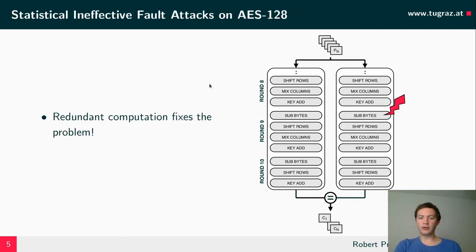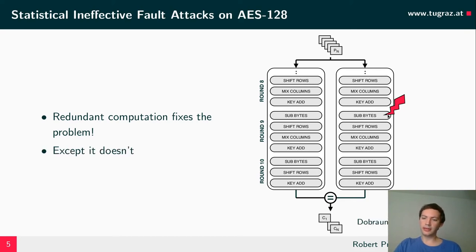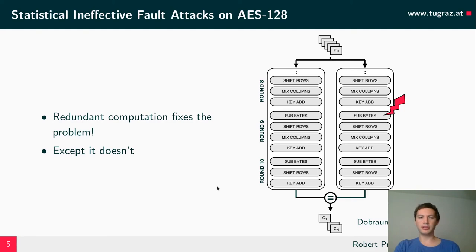What about redundant computation? On first glance, this should fix the problem, and it kind of does. In this example, we execute the encryption twice, and we assume the attacker is only able to perform a fault injection in one of the redundant computations in round 9. The redundant computation ensures that faults which actually change the output never reach the attacker, because the faulty result does not match the corresponding redundant computation. So the attacker will never get to see any faulted computations. However, while redundant computation does prevent statistical fault attacks, it does not prevent SIFA.